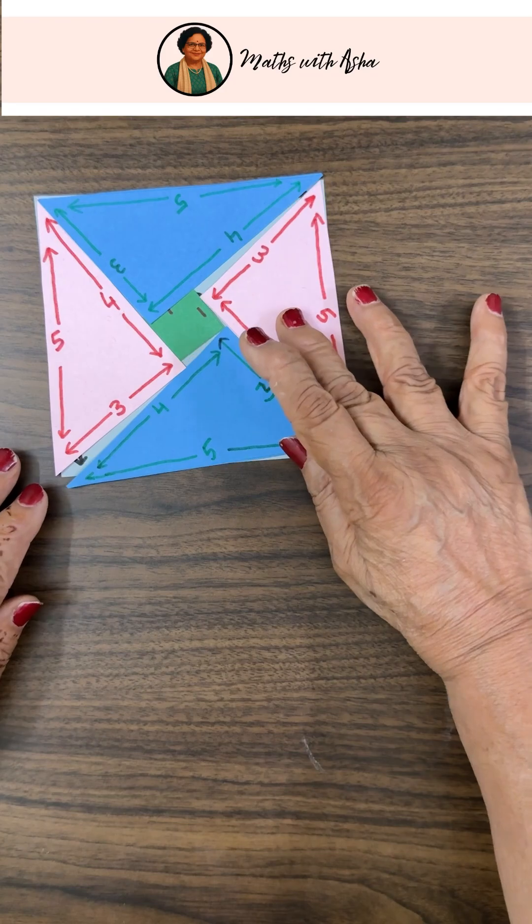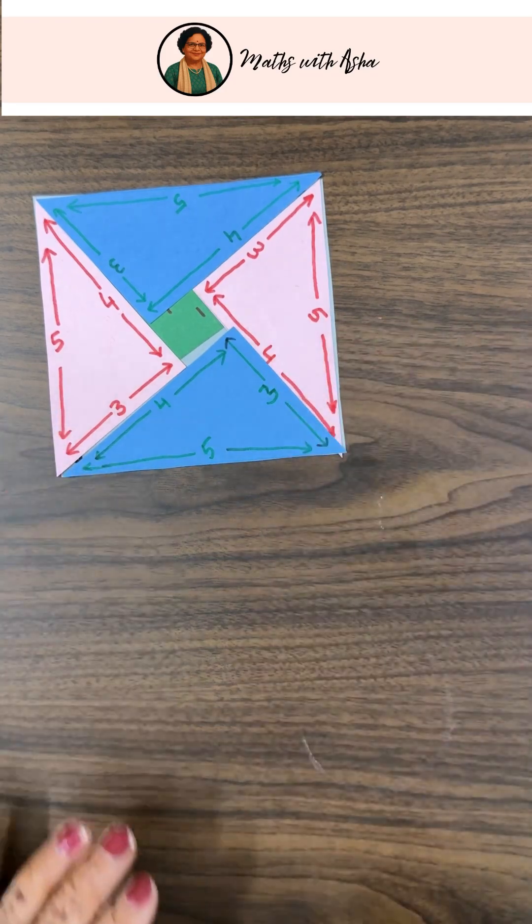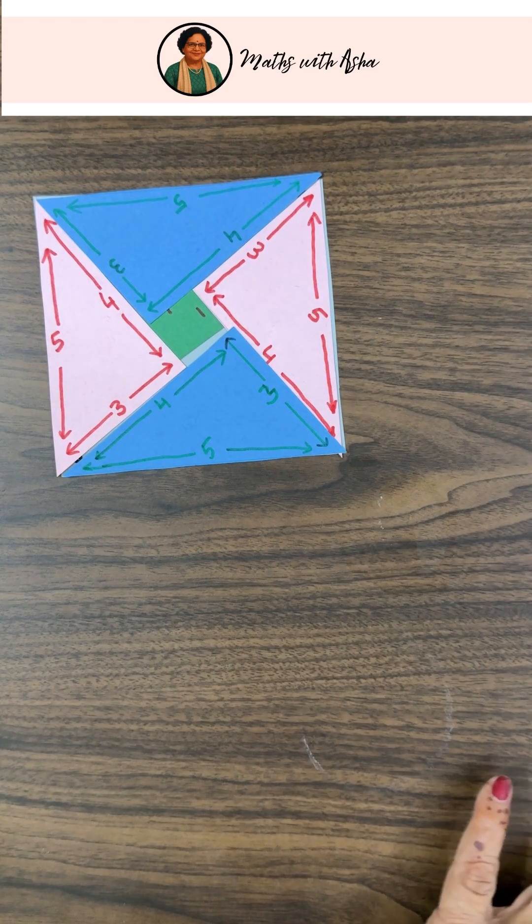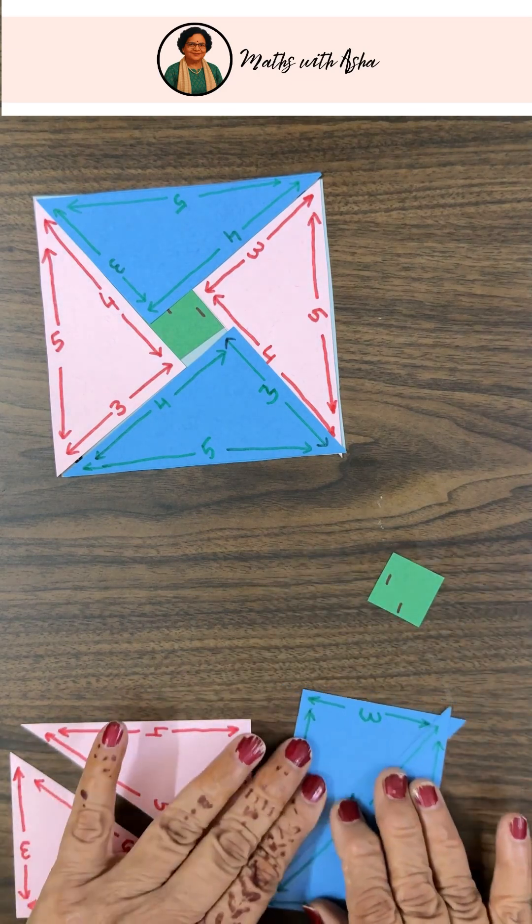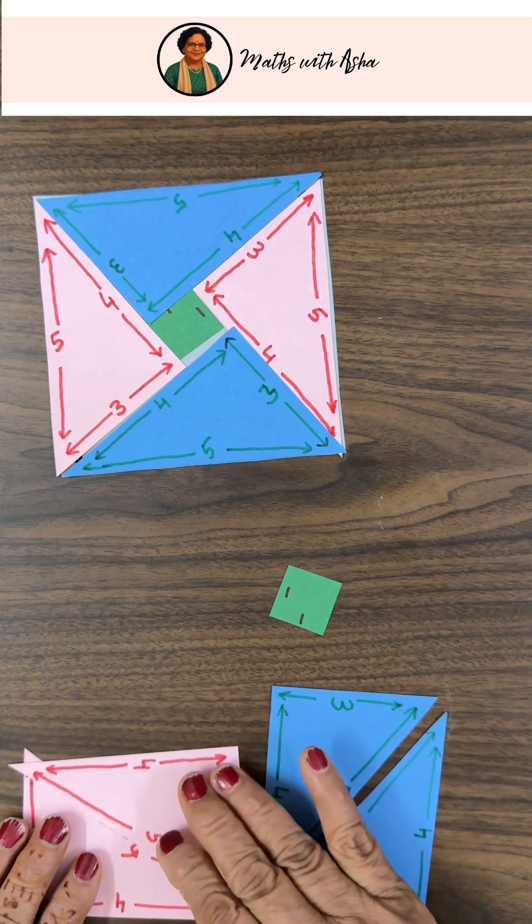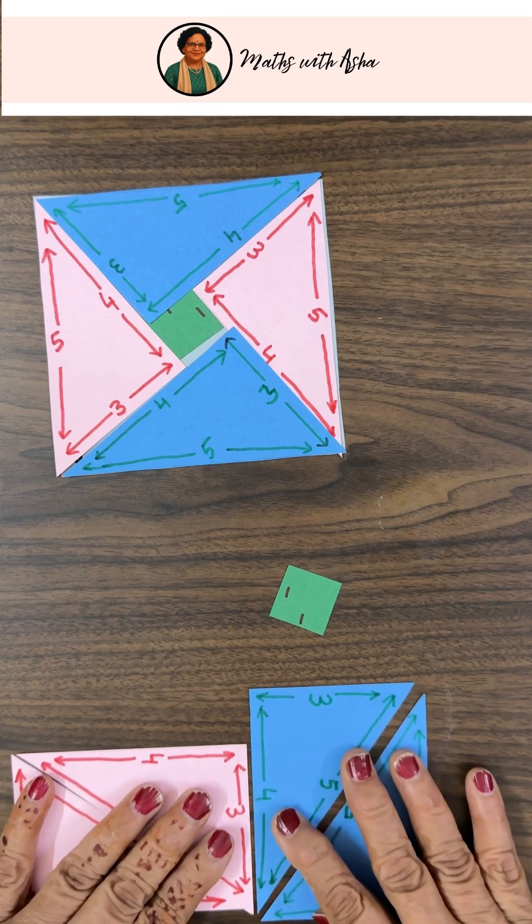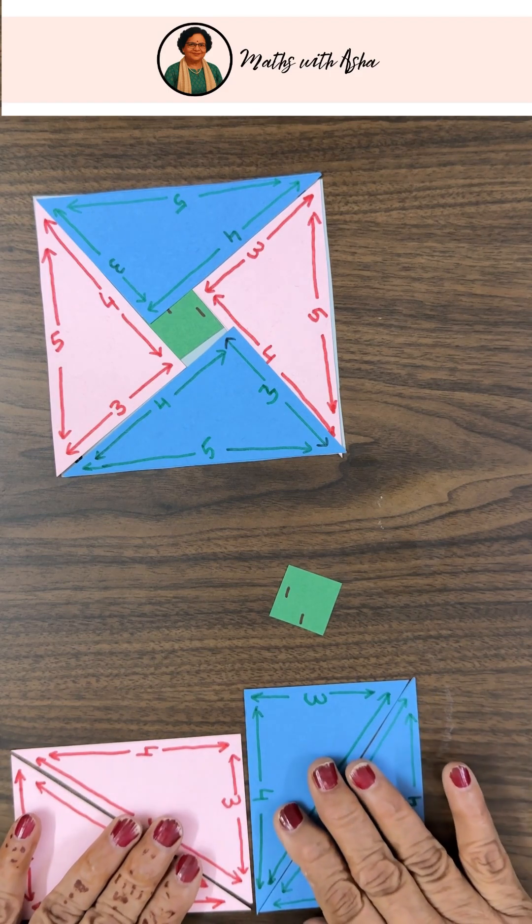What I have done is, I am going to rearrange these in another way. I have taken more copies of these, 4 copies of the triangle and this square. And what you can do is, you can arrange them in this way.